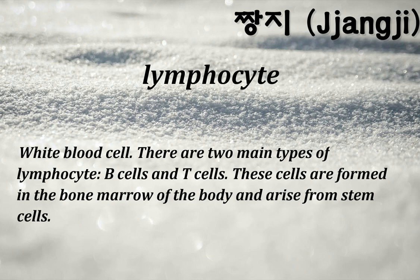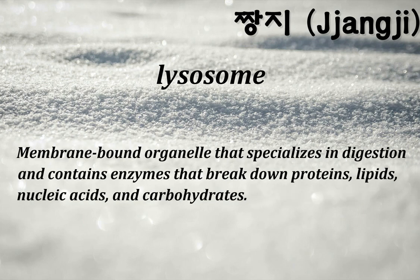Lymphocyte: a white blood cell; there are two main types — B-cells and T-cells. These cells are formed in the bone marrow of the body and arise from stem cells. Lysosome: a membrane-bound organelle specialized in digestion and contains enzymes that break down proteins, lipids, nucleic acids, and carbohydrates.